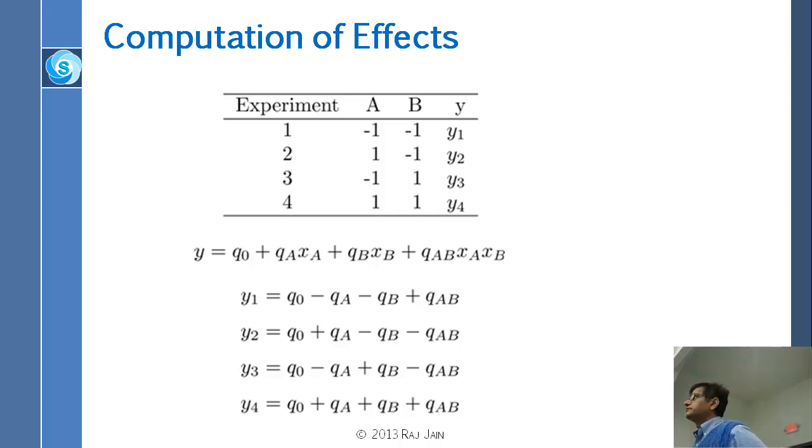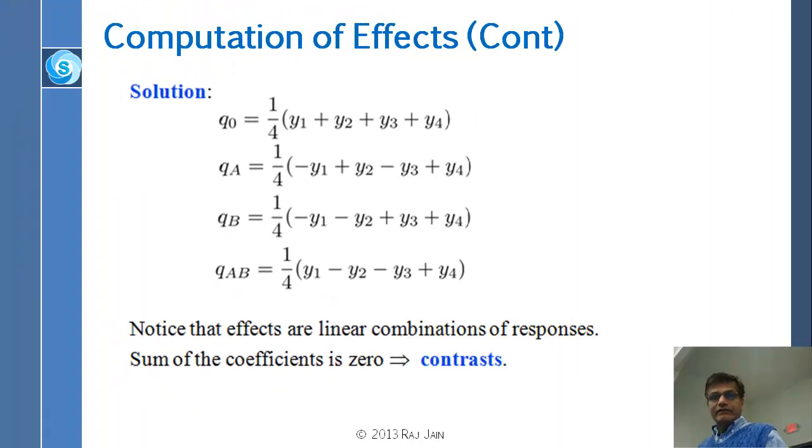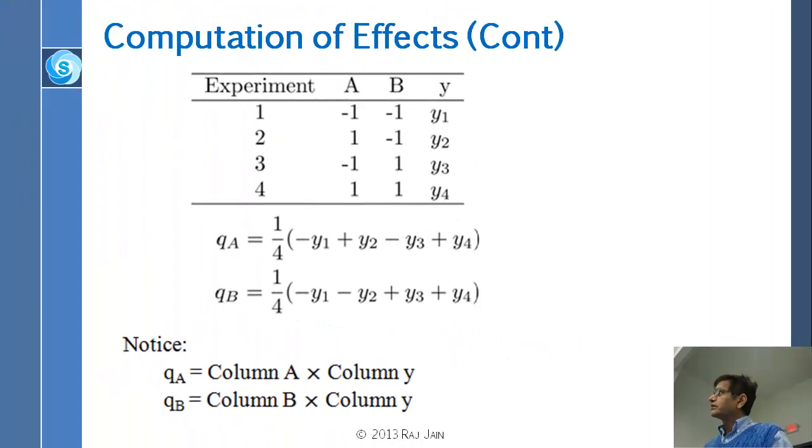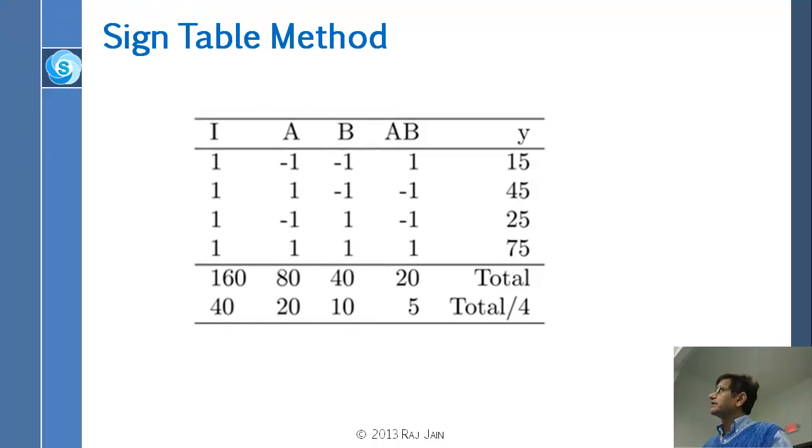Write down the y values in that order and then solve the equations. Let me go through an example. You write down a table with A, B as we said, but add two more columns, an I column which is identity column, write all ones, and a product column AB which you write the product of the two terms. Now you write down the y column. Each column you take as a vector, you just take this I vector and the y vector, multiply them and add the sum. So this is 160, which is 1 times 15 plus 1 times 45 plus 1 times 25 plus 1 times 75 is 160. Then you do the A column and the y column, minus 1 times 15 plus 1 times 45 minus 1 times 25 plus 1 times 75, you get 80 and so on and so forth.